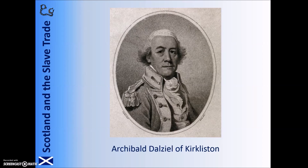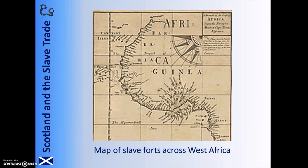Another example was Archibald D.L. from Curtliston, who ran various slaving depots in Africa. There were slave forts right across the west coast of Africa, and Scots found numerous job opportunities in them, including as guards and as clerks dealing with administration.